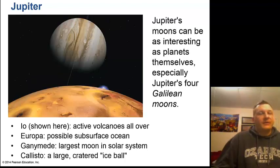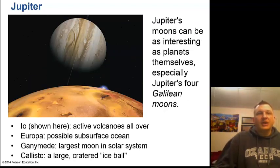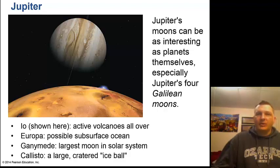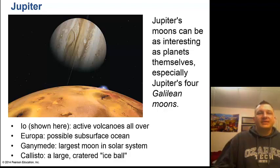Jupiter has four very interesting large moons. Io has active volcanoes of sulfur all over it. Europa has a possible subsurface icy saltwater ocean and could potentially harbor life. Ganymede is the largest moon in the solar system, and Callisto is a large cratered ice ball. Galileo observed these four moons in 1609 with his new telescope, and we call them the Galilean moons.